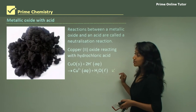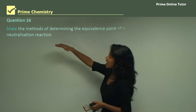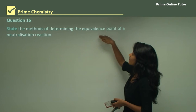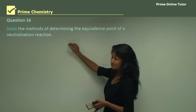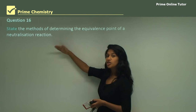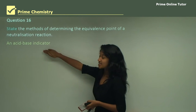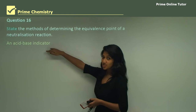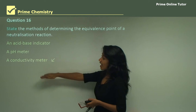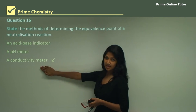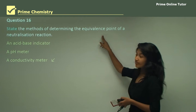Question 16 asks: state the methods of determining the equivalence point of a neutralization reaction. Since it says 'state,' you need to identify them. The three methods are: an acid-base indicator such as methyl orange, a pH meter, and a conductivity meter.